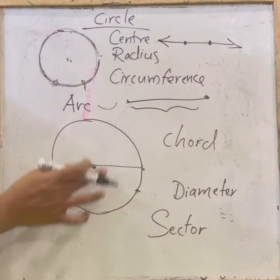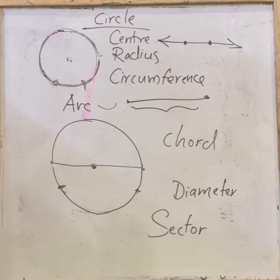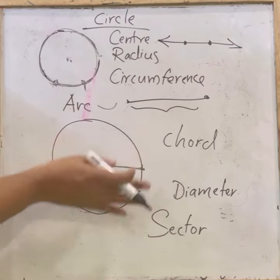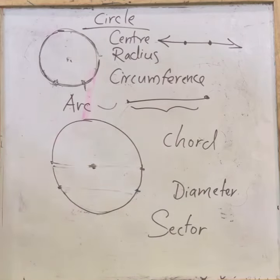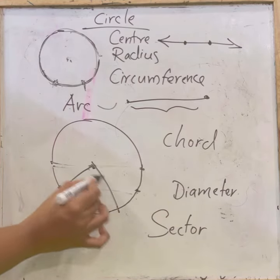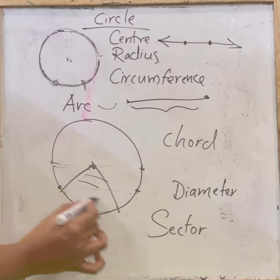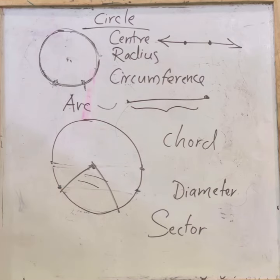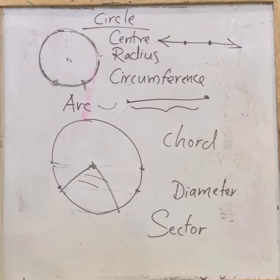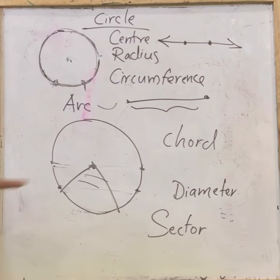In the diameter, both segments are equal, that is they are divided into semicircles. Coming to sector — if we draw two radii, the portion between them is called the sector of a circle. You can see a major sector and a minor sector.